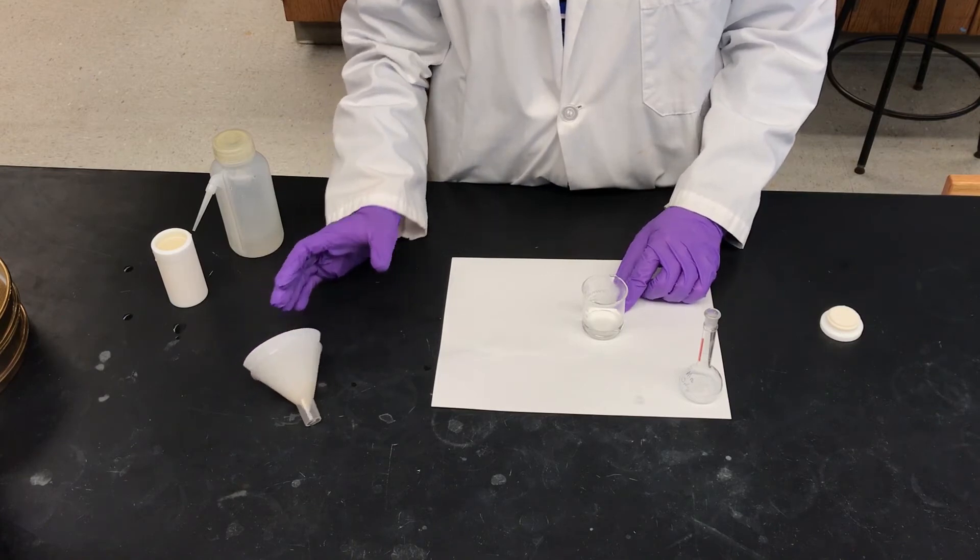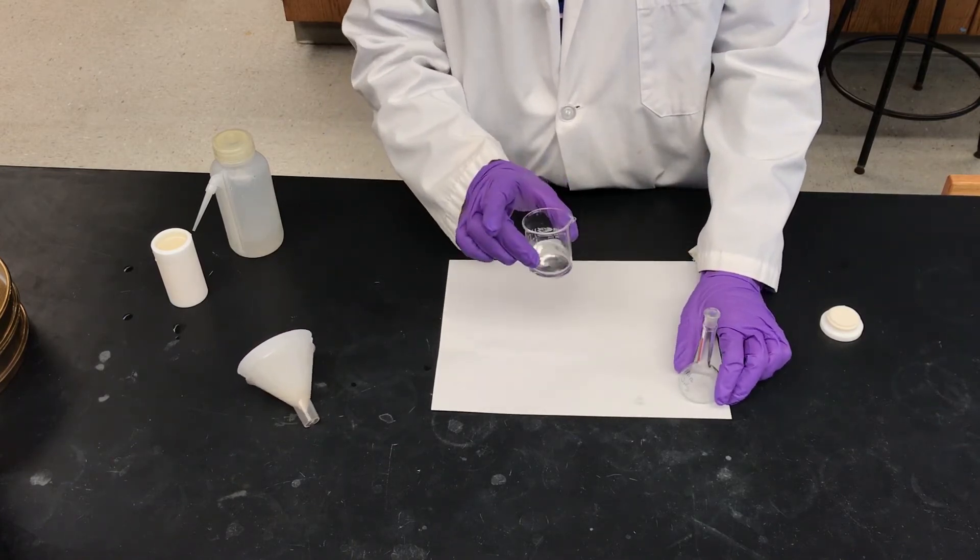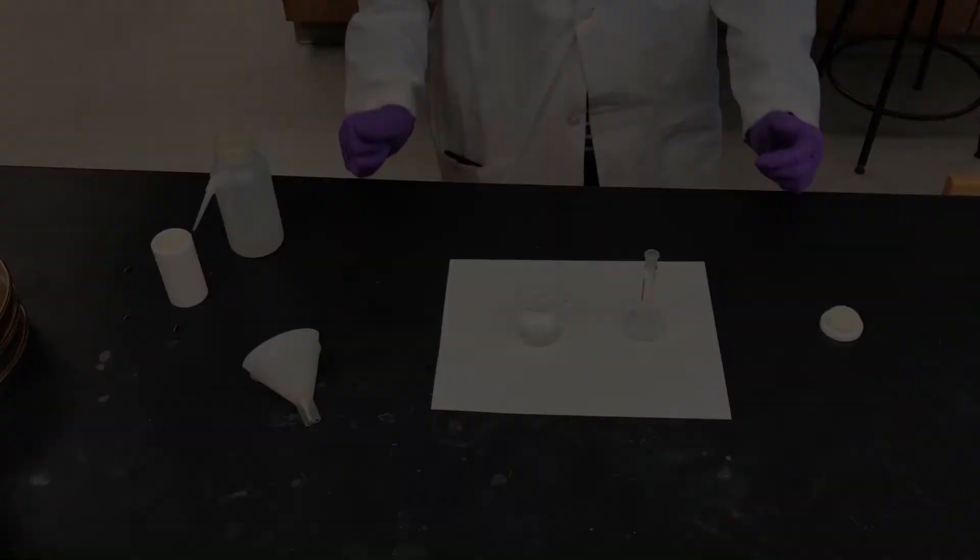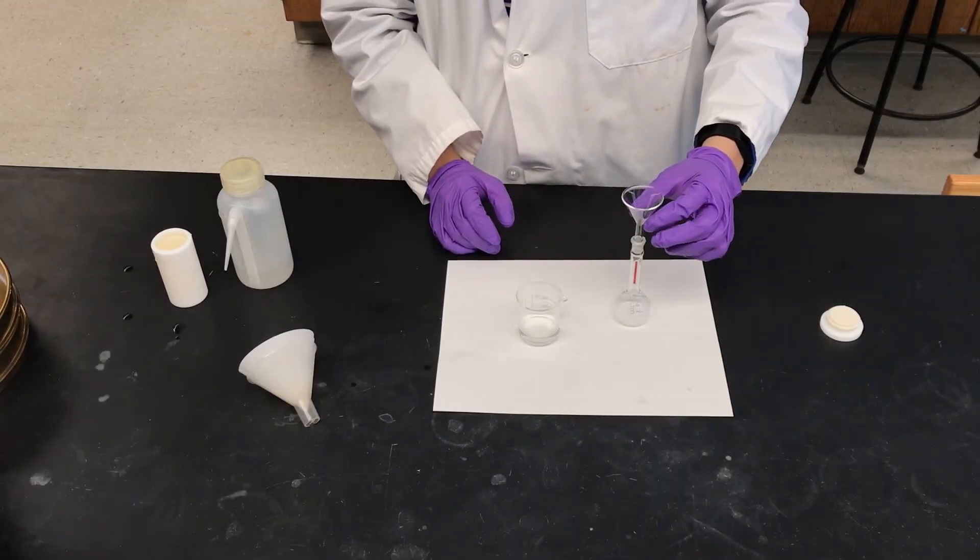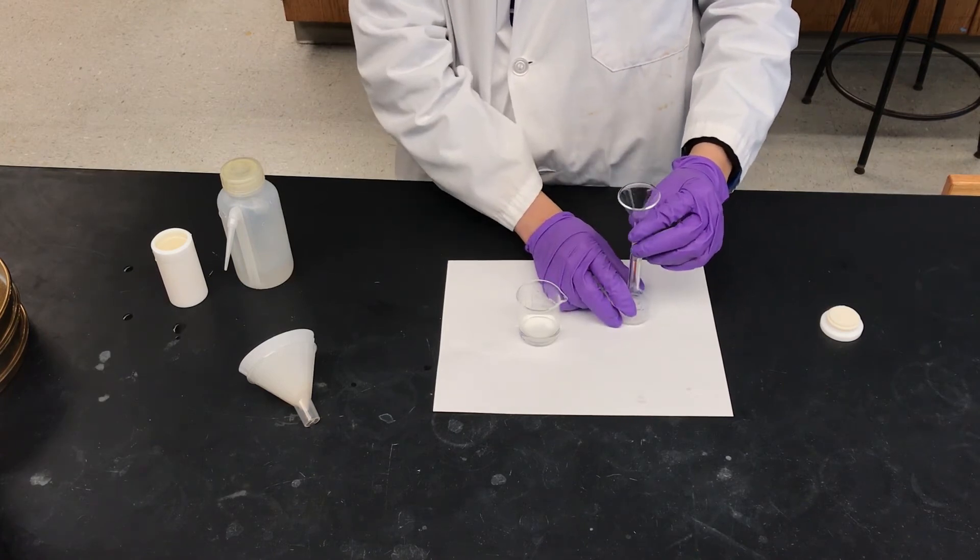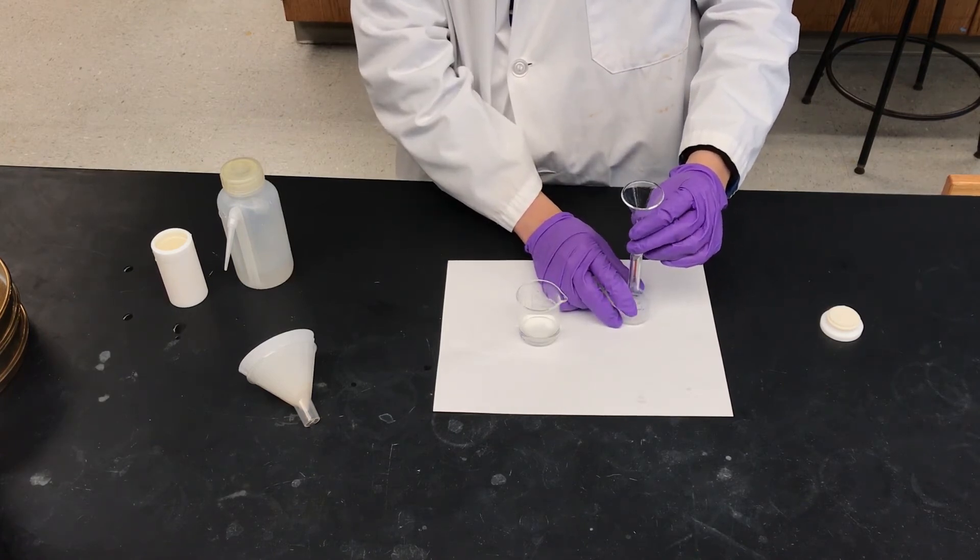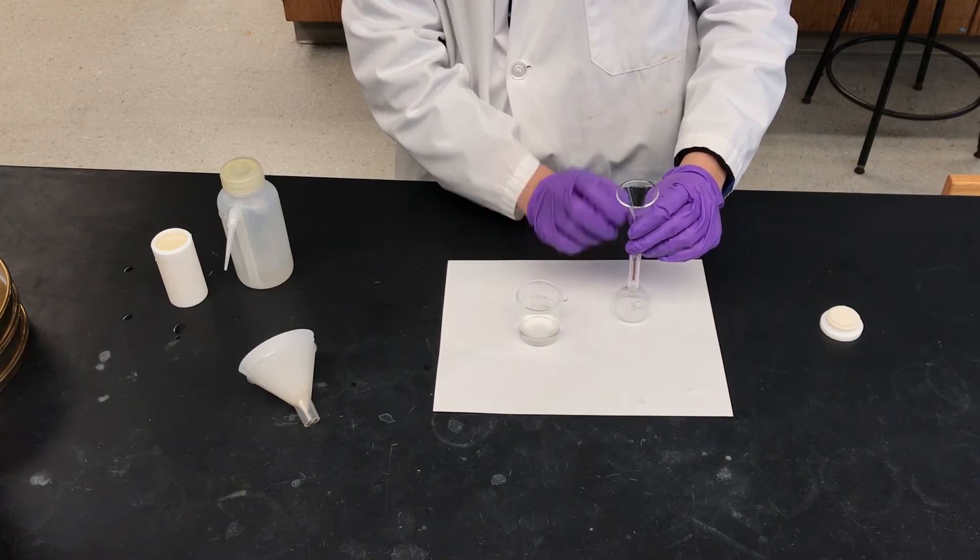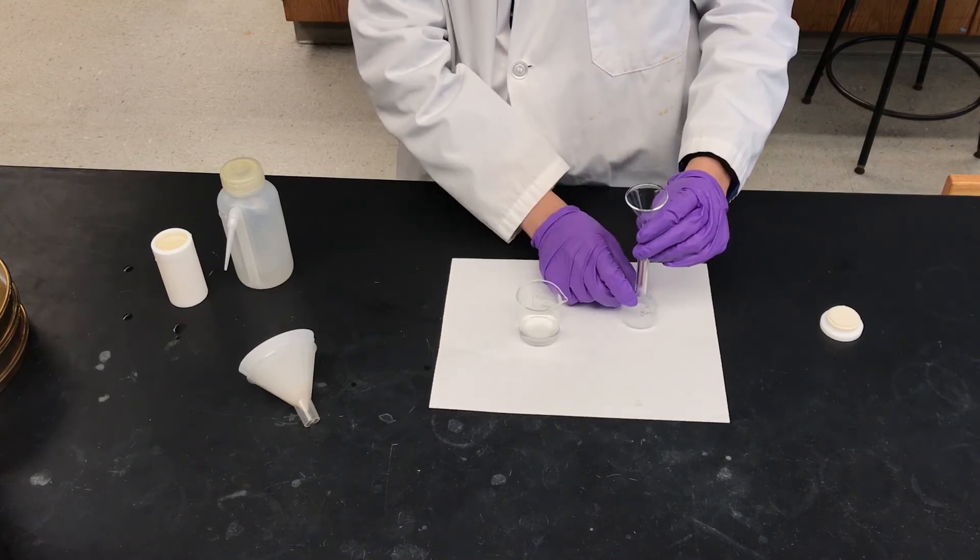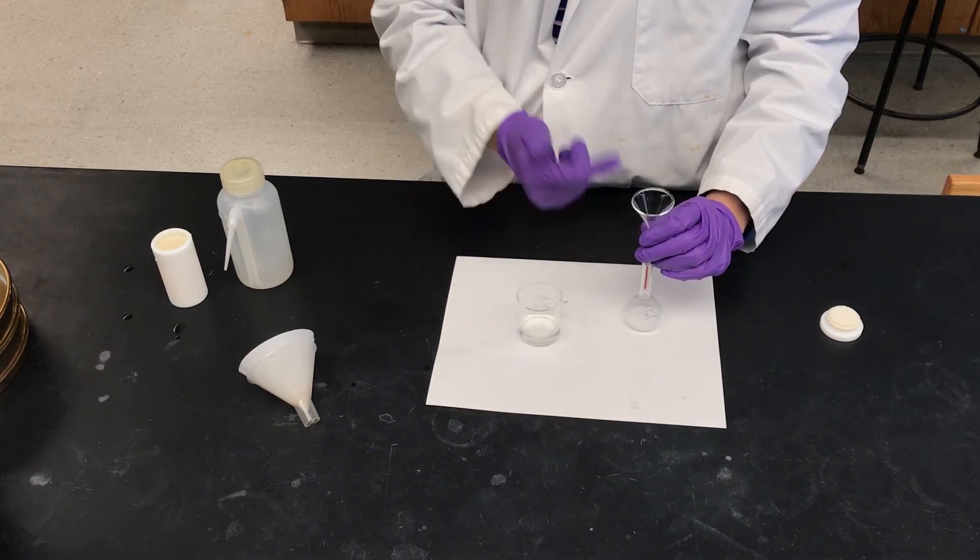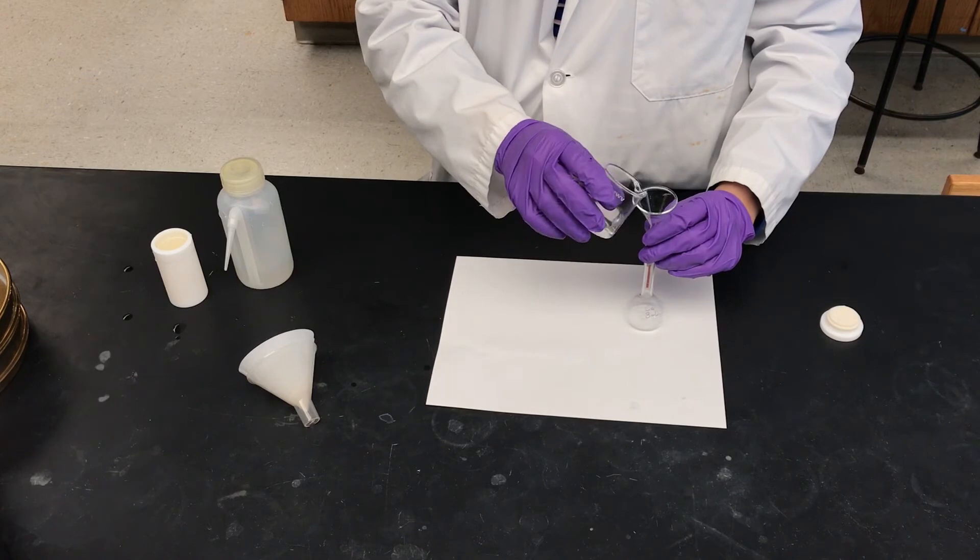So our next task is to transfer this which contains our analyte into a volumetric flask. So I'm just going to put my funnel right in the volumetric flask. If it forms a seal, this isn't going to work all that well. So hold it so that you can actually know that there will be air able to get in to counterbalance the displacement of air inside the flask. Okay, so we're going to transfer.